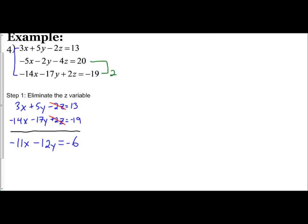I'm going to do now the pairing of the second and third equation to eliminate the z variable again. This one we said involved multiplying the bottom one by a 2. So, let's just write down what we have originally. We have our middle equation, which is negative 5x minus 2y minus 4z equals 20. And our bottom equation, negative 14x minus 17y plus 2z equals negative 19. We're going to multiply that bottom equation by 2.